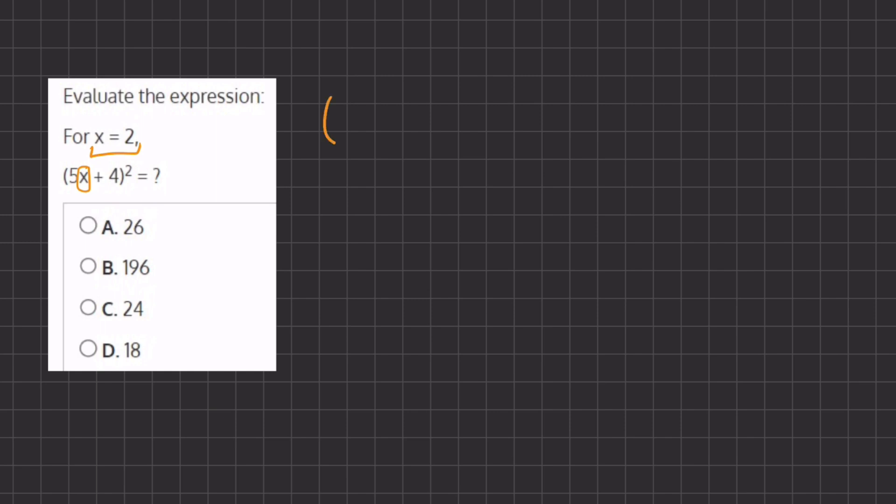So we have our big parentheses which is 5 times our x which is 2 plus 4 and all of this is squared. We're going to work on the inside parentheses first and then we'll go to the outer parentheses.